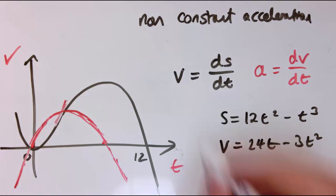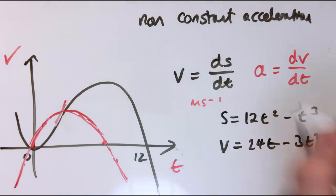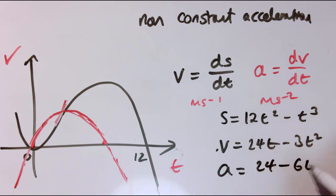The units of velocity are meters per second, and acceleration is meters per second per second, which is meters per second squared. So it's telling us how quickly the velocity is changing. So if I differentiate the velocity, I get the acceleration. So here, that's 24 minus 6t.